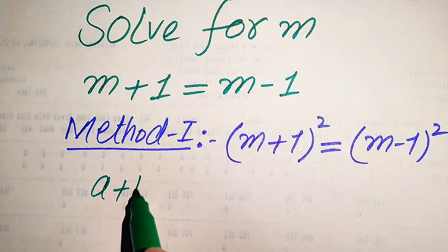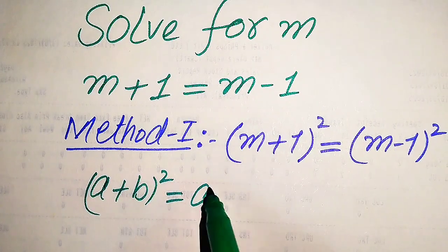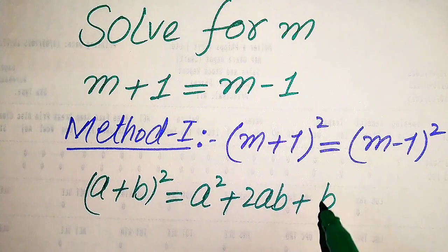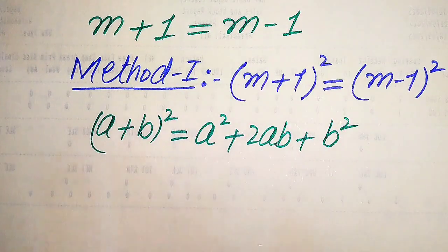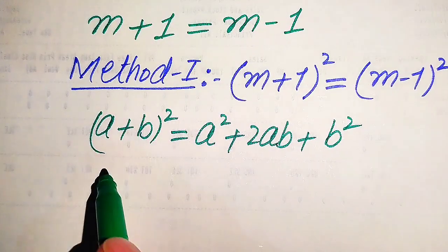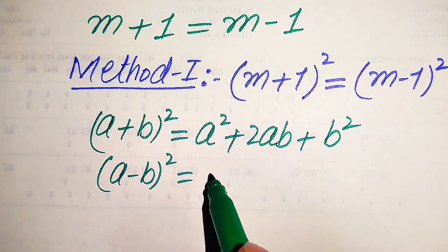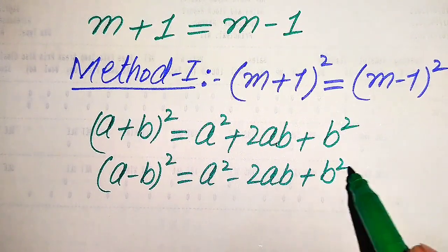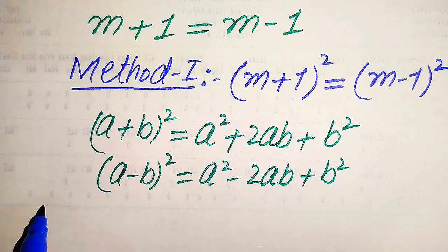Here we need to use two algebraic formulas. The first formula is: (a + b)² = a² + 2ab + b². The second formula, used on the right-hand side, is: (a − b)² = a² − 2ab + b². We apply these two formulas on both sides of the equation.